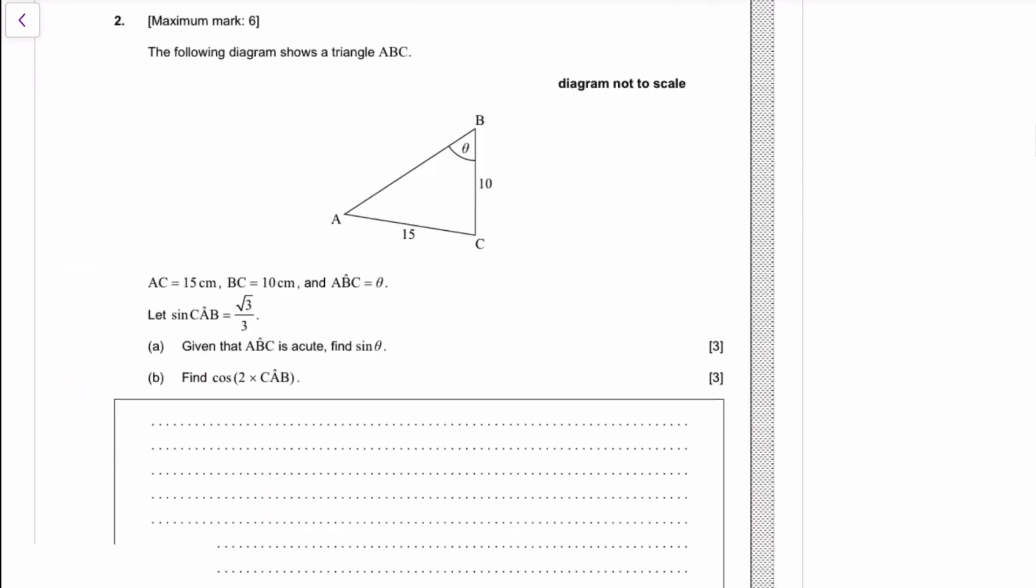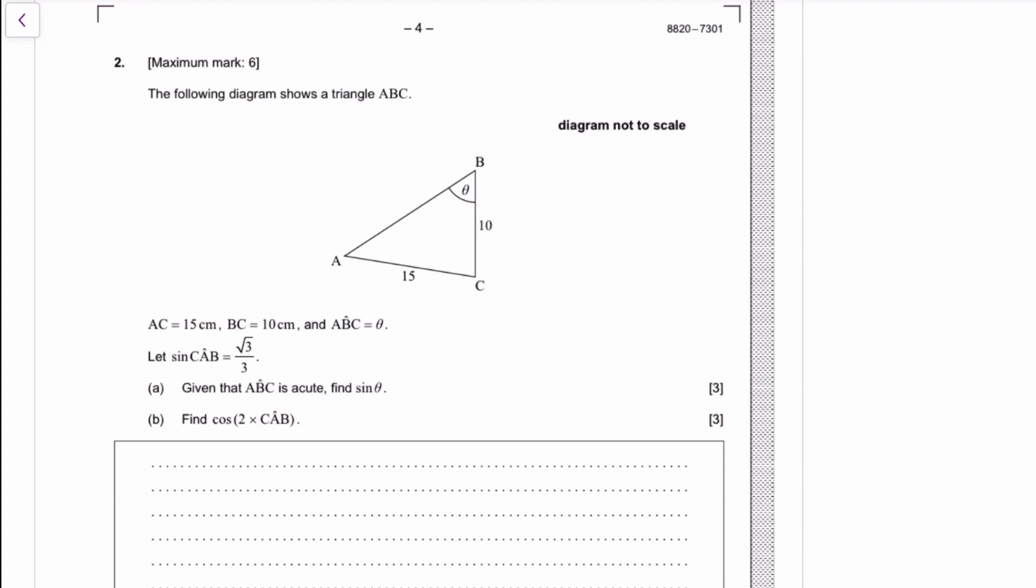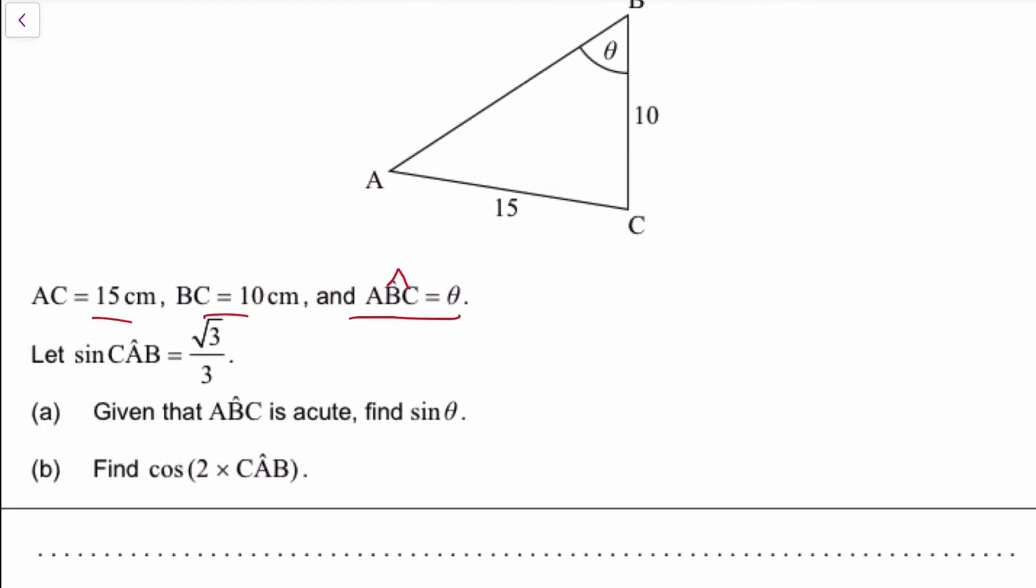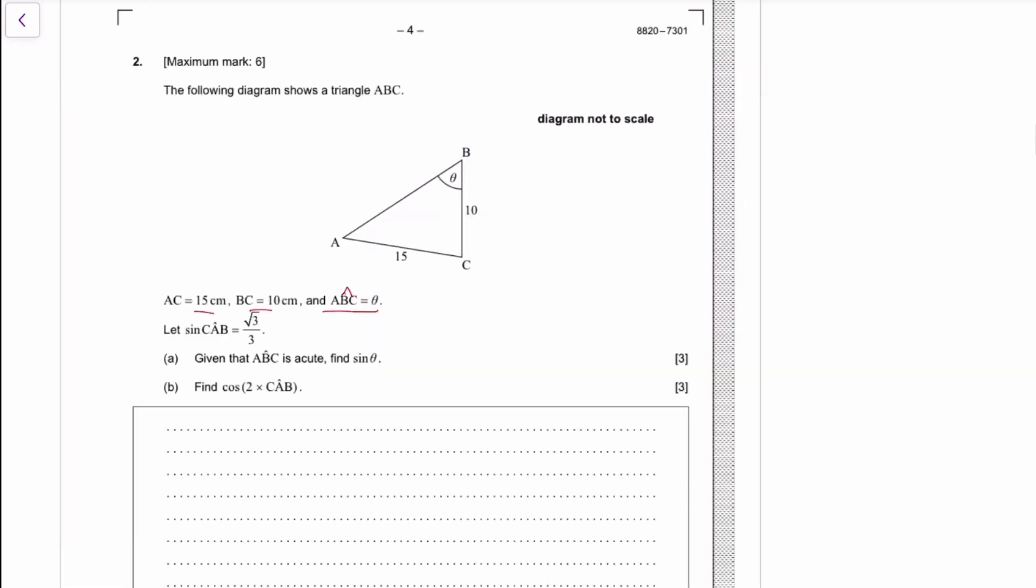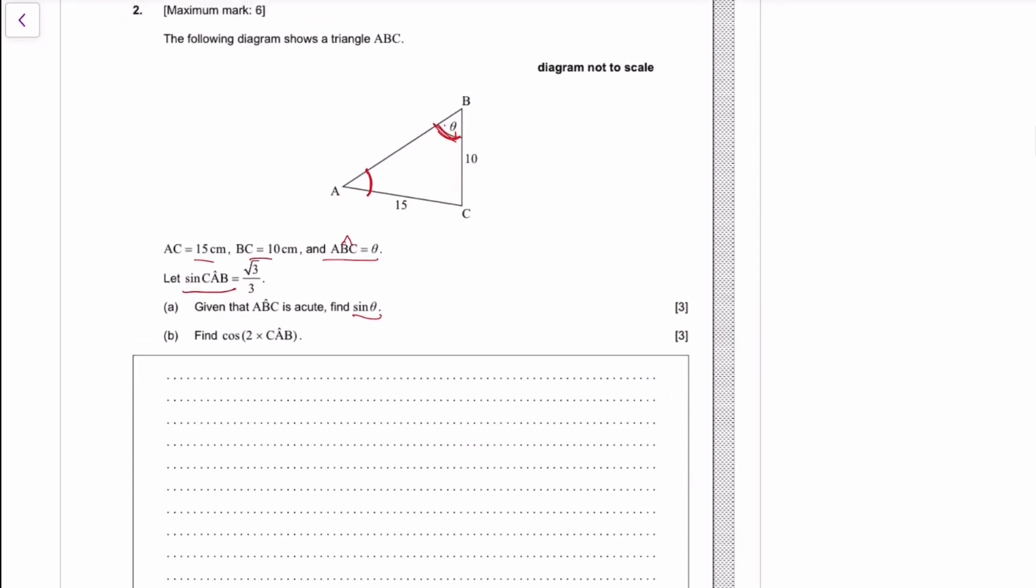As expected, first question should not be difficult. Now a sine rule, cosine rule type of question. We have some lengths. Angle ABC is theta. This symbol means angle, so angle ABC is this one. You also know that sine CAB is root 3 over 3. Find sine theta.